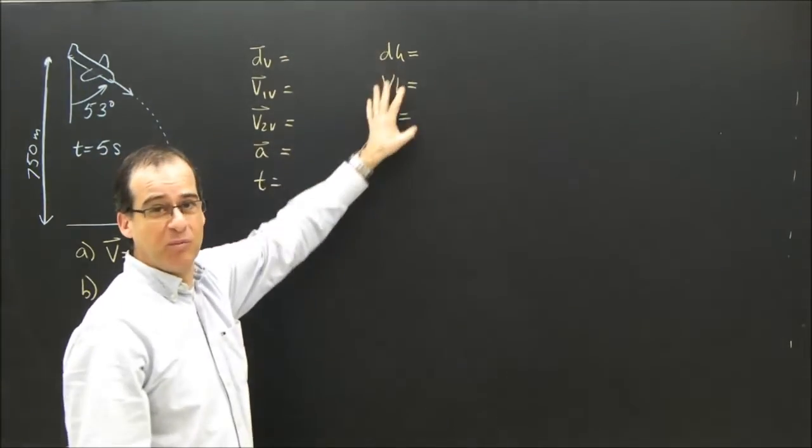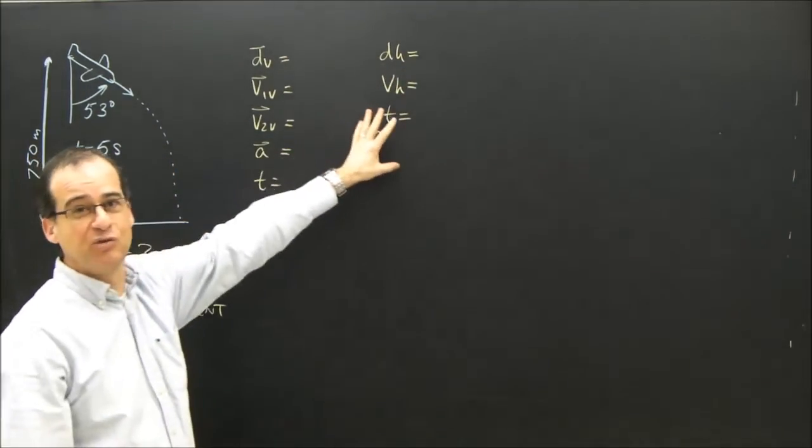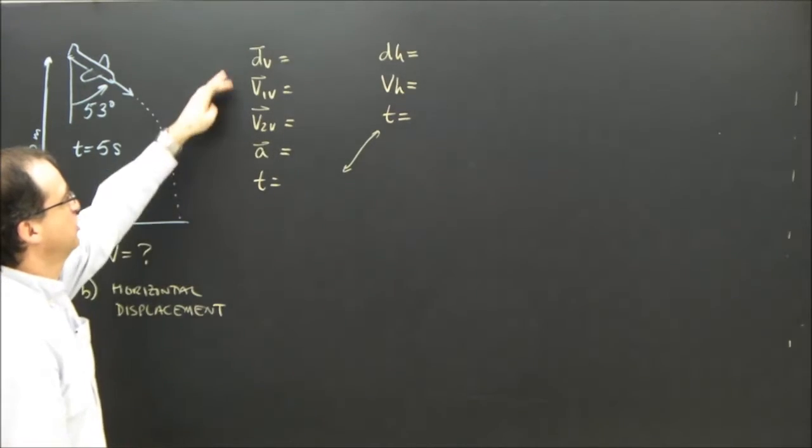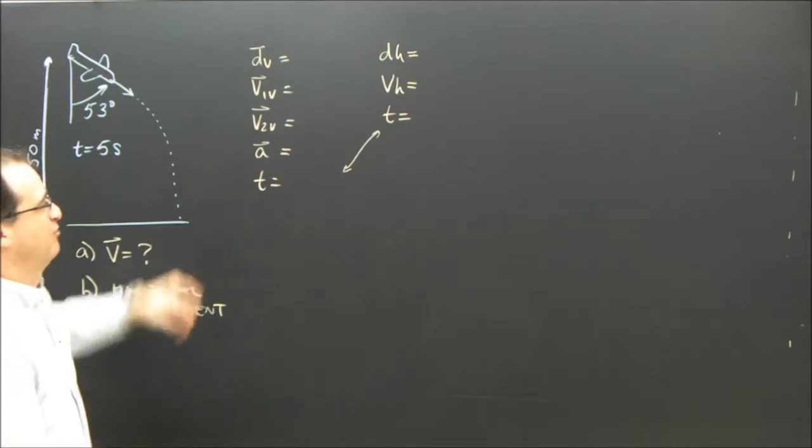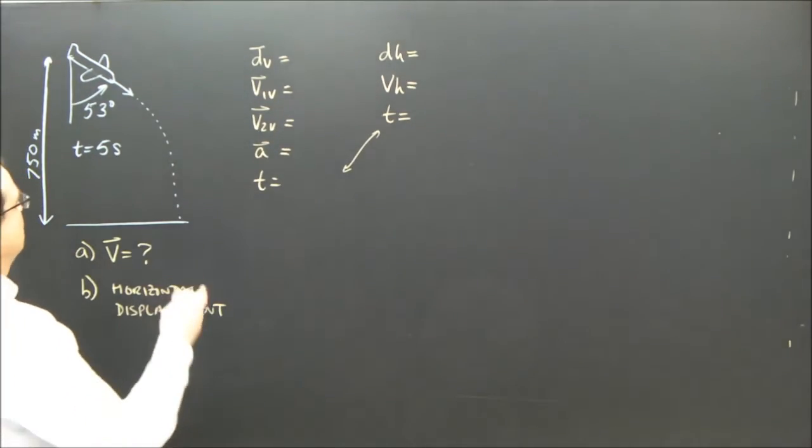So there's my horizontal, uniform motion, three things. D equals V times T, one equation. Vertical information, one, two, three, four, five things, and I've got five equations. So let's put in what I know.